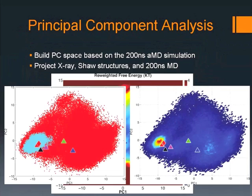If you do a principal component analysis, the blue dots on the left hand side show what you see from a standard MD simulation - in 200 nanoseconds you see very little. The red dots show what we see in the accelerated MD simulation, so we get much more effective sampling of phase space. We do cover all of the structures that they saw in the Science paper. On the right we show essentially a probability map, and as you see we do get the basin correct - we still stay in the main basin on the left but we do sample the other sections.